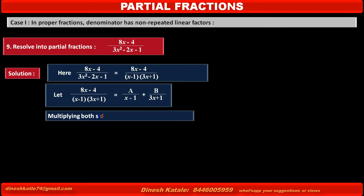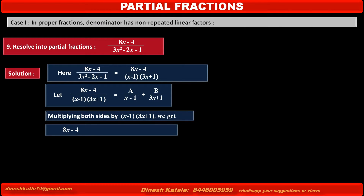Multiplying both sides by (x - 1)(3x + 1), the denominators cancel. The left-hand side becomes 8x - 4, which is equal to A(3x + 1) + B(x - 1). Consider this as equation number 1.